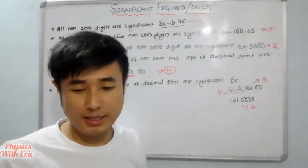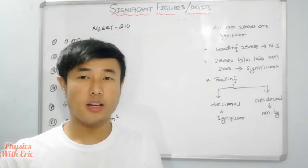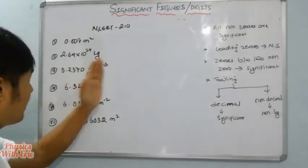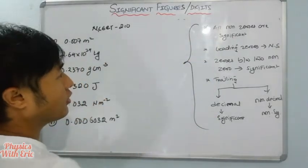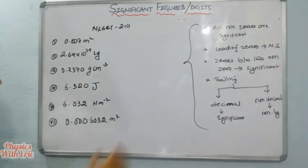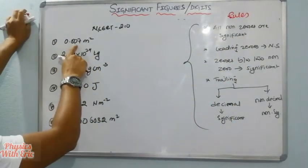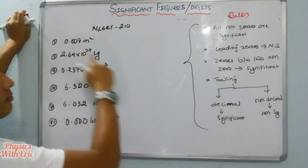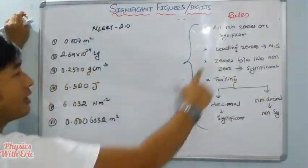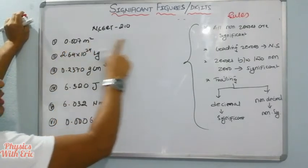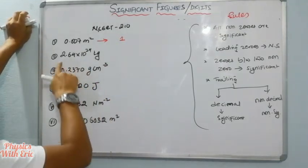Let's do questions from the NCERT book for clarity. Question one: 0.007 m². The leading zeros are non-significant. So only the digit 7 is significant — this number has 1 significant figure.